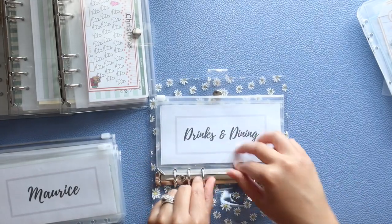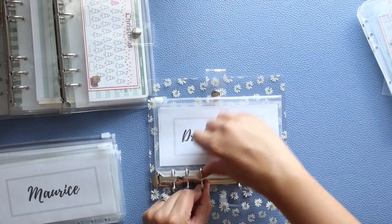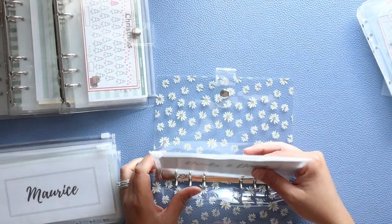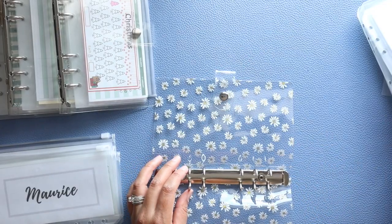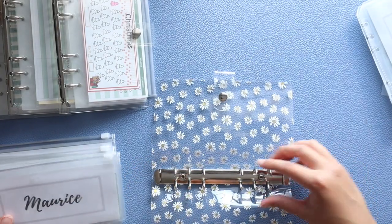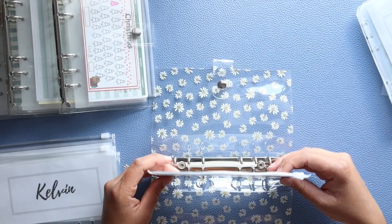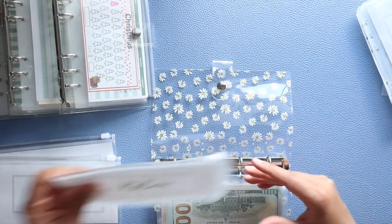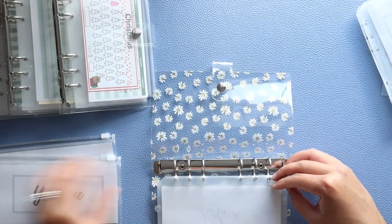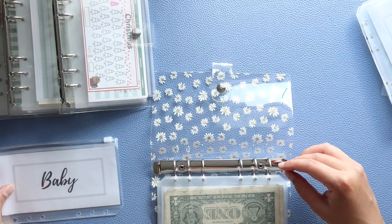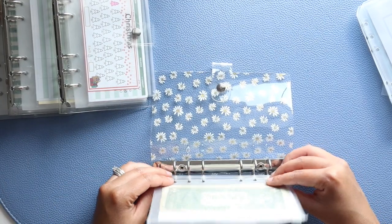This was the wedding binder, but since we are all done with the wedding, Drinks and Dining will be coming out, and I'm going to be adding Maurice, Kelvin, Jasmine, and Baby into this binder.